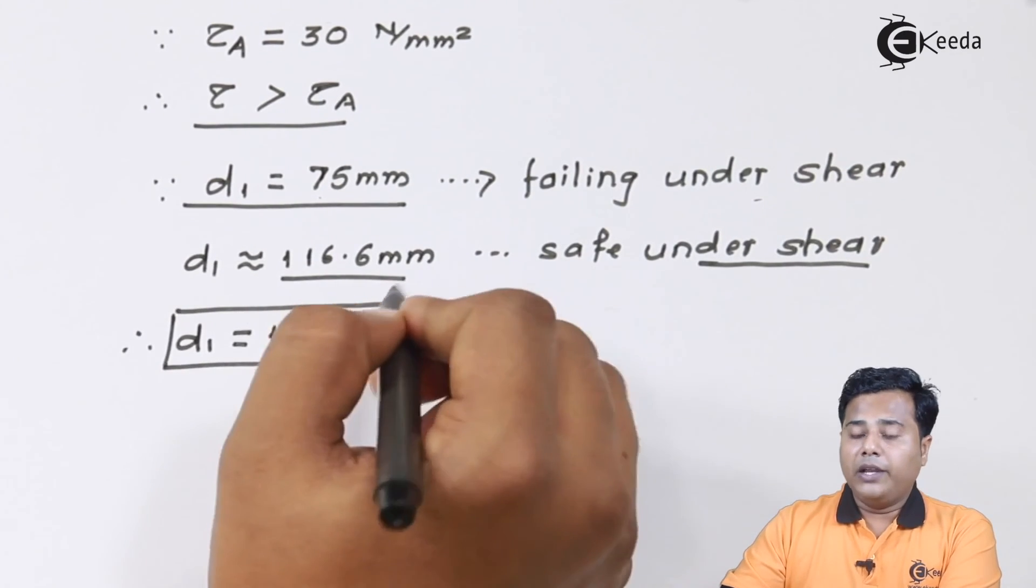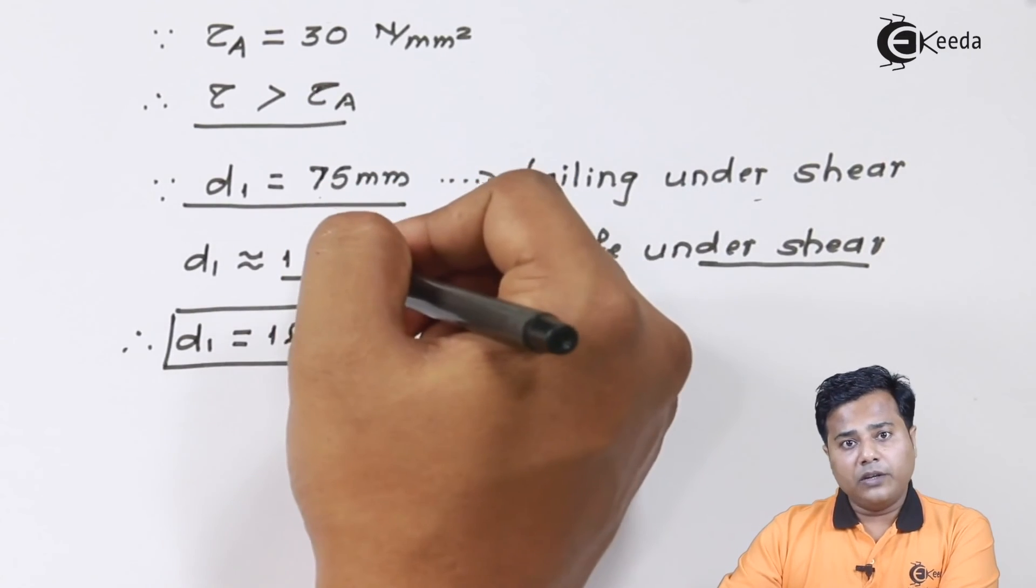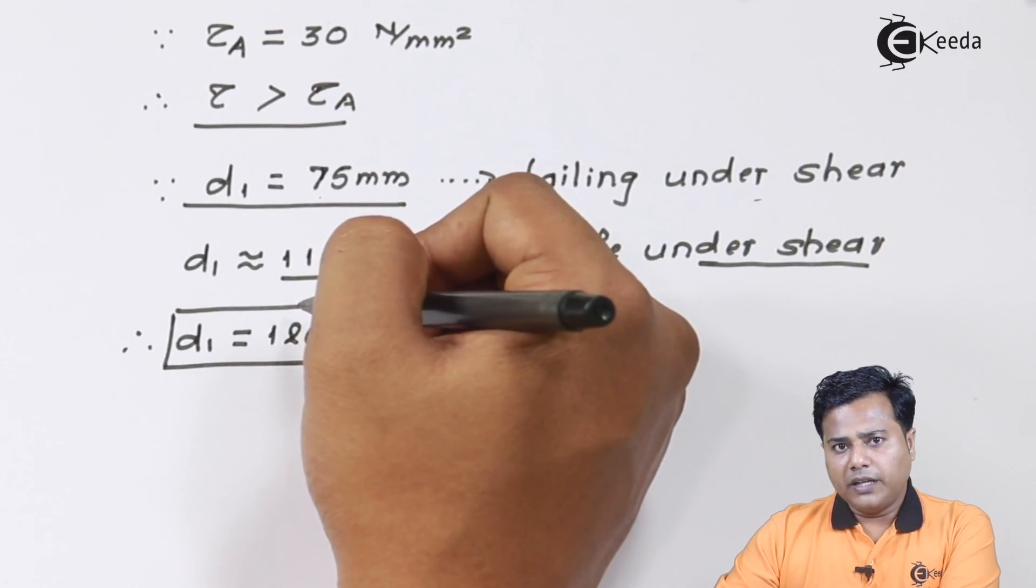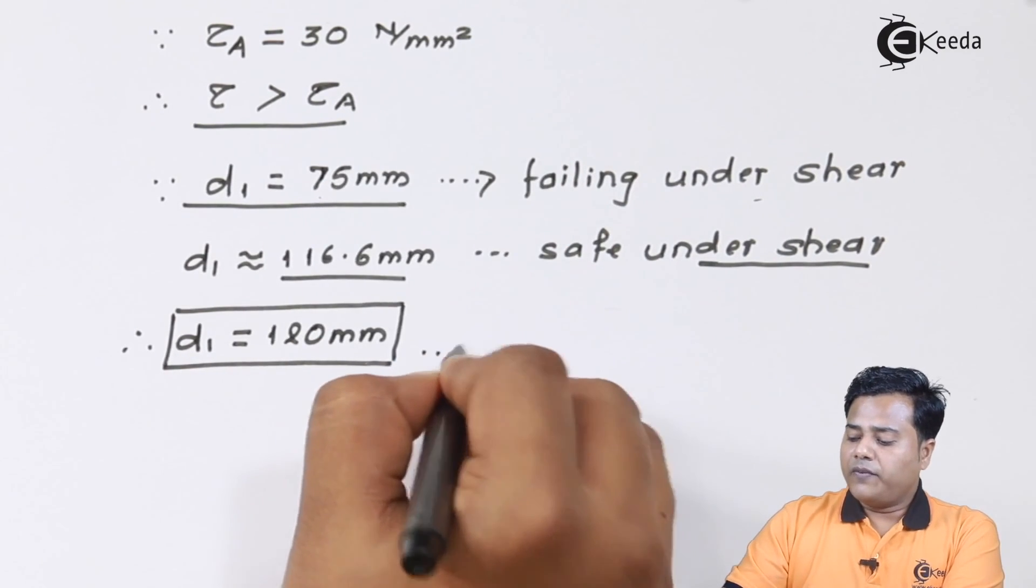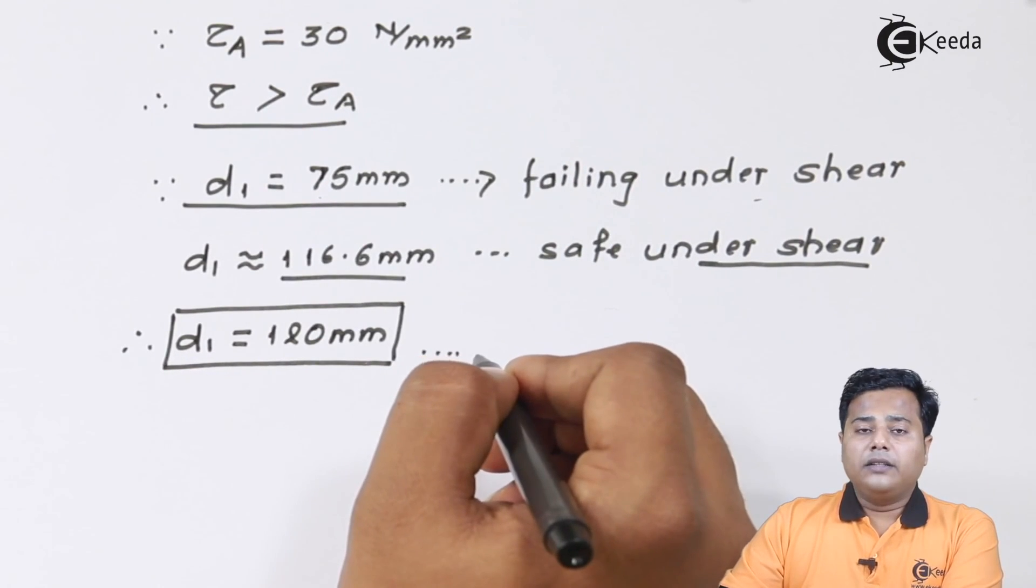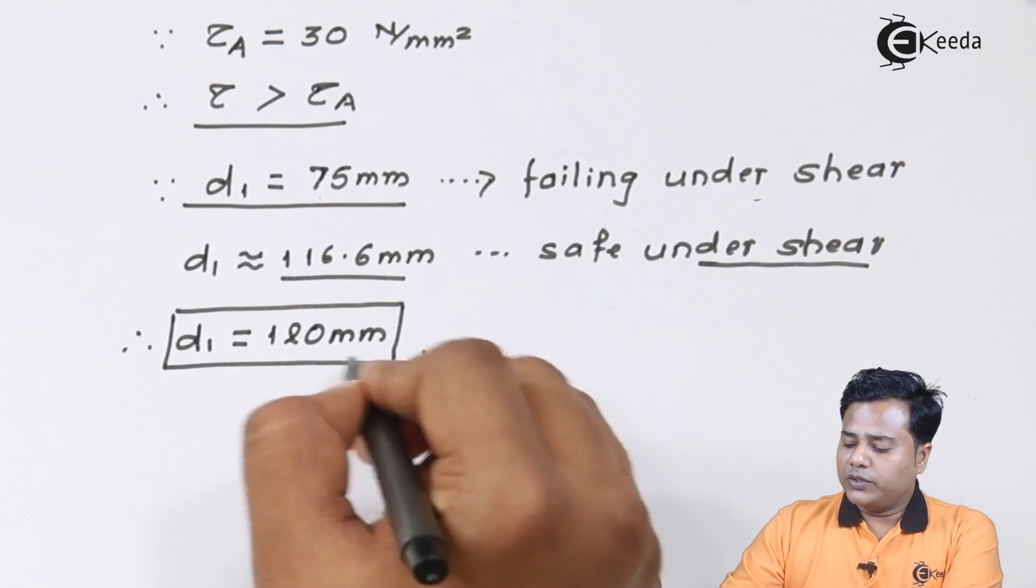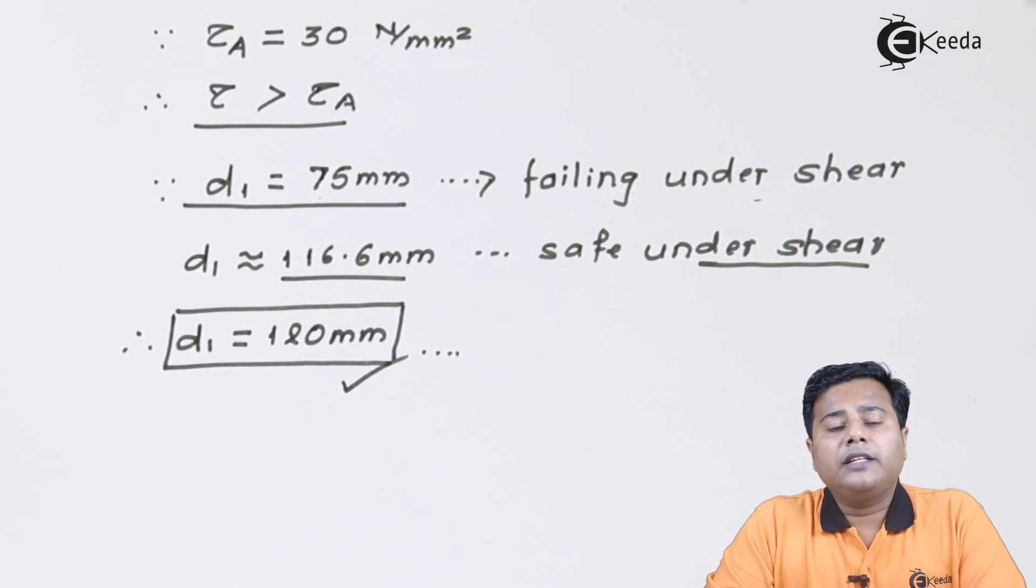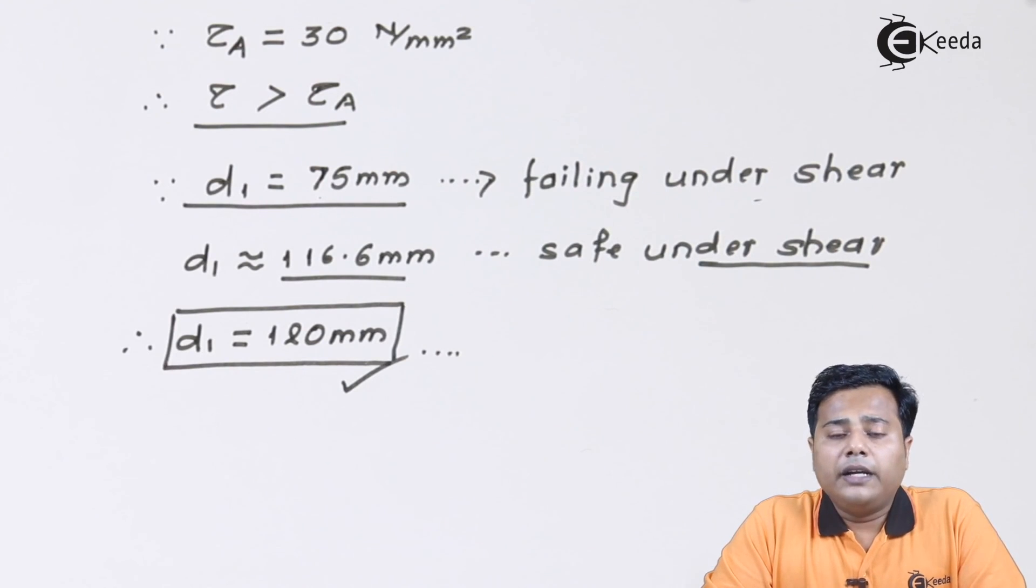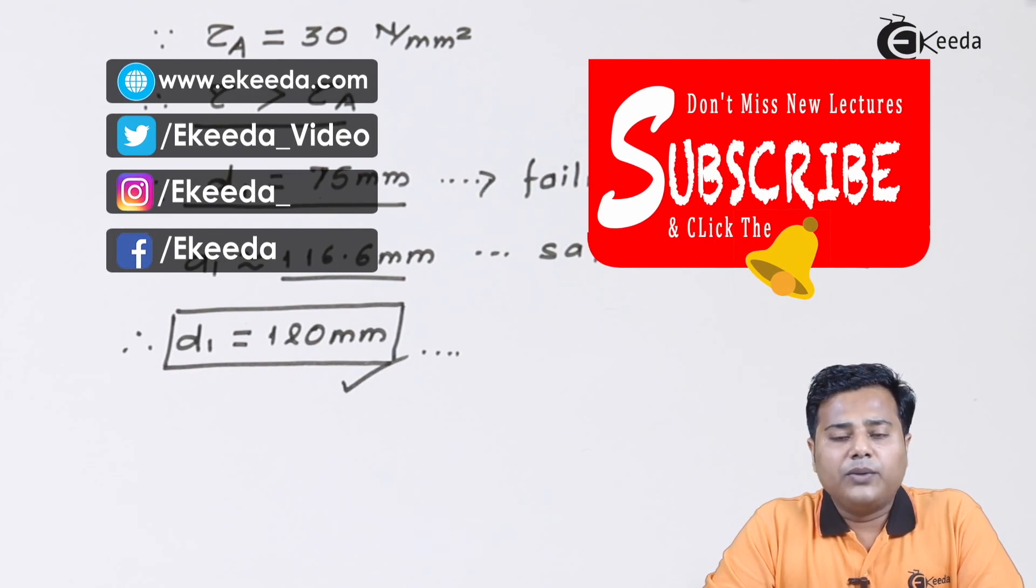That means even the value of d₁ equal to 100 mm is not safe for this particular calculation. You can perform the calculation in the same manner by trial and error method. Hence, eye end diameter is the only important thing. We are done with the design of eye end. In the next lecture we'll be looking at design of double eye end, also called forked end. If you like this video please subscribe to Ikeda. Thank you.